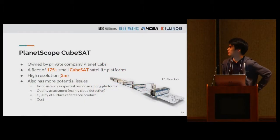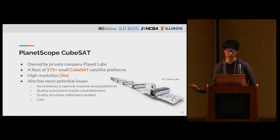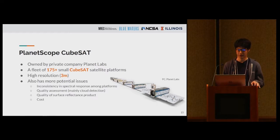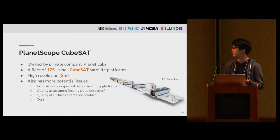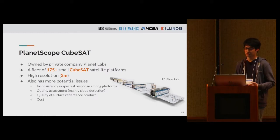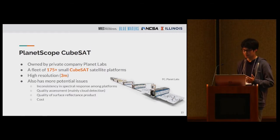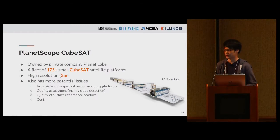The second project involves CubeSat platforms — miniaturized satellite platforms. This particular mission is owned by a private company called Planet Labs. It solves the trade-off between high resolution and high frequency by using a fleet of almost 200 small CubeSat platforms. It has a resolution of three meters and a revisiting period of a couple of days. However, it has problems unique to this approach: inconsistency in the spectral response of different platforms, which a single-sensor platform like Landsat 7 or Landsat 8 doesn't have.